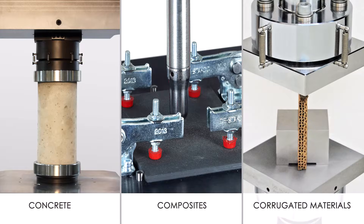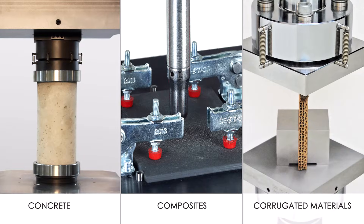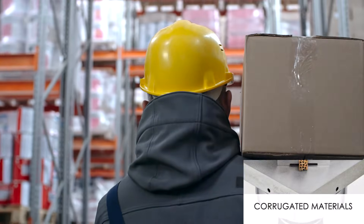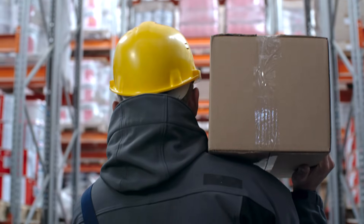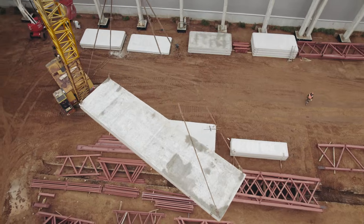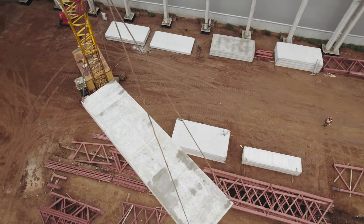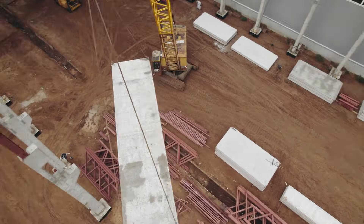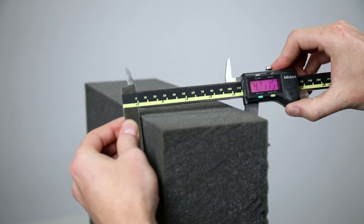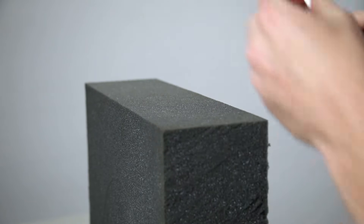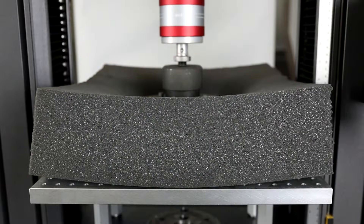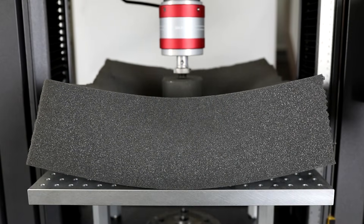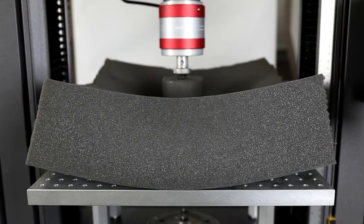Concrete, composites, and corrugated materials such as cardboard are often used in a load bearing capacity where their integrity under compressive forces is critical. Other materials such as foam play a key part in manufacturing consumer goods like mattresses and seat cushions.